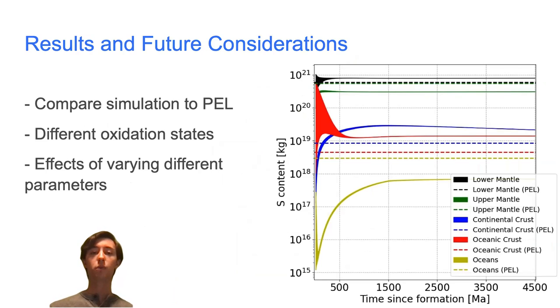Looking forward, some steps that we would like to take would be separating pathways for different oxidation states of sulfur and varying different parameters, such as Henry's law constants or volcanic outgassing rates, to see the effects they have.